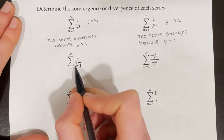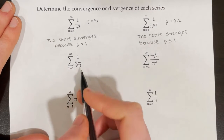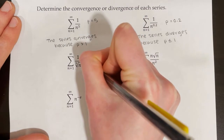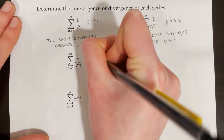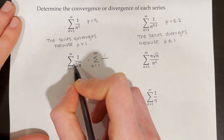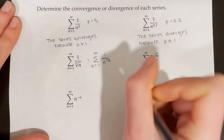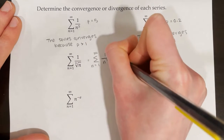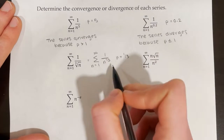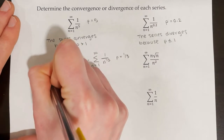In our next example, we have the series from n equals 1 to infinity of 1 over the cube root of n. I'm going to rewrite this slightly as the series from n equals 1 to infinity of 1 over n to the power of 1 third. Now we can clearly see that p is equal to 1 third. Since 1 third is less than or equal to 1, this series will diverge.